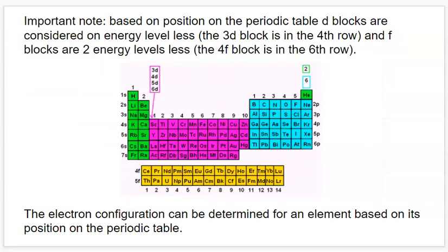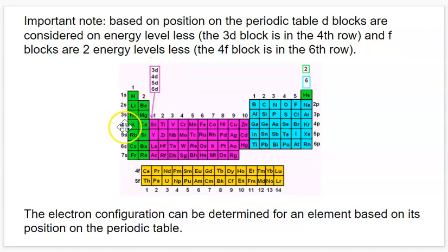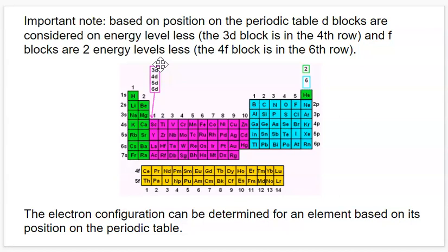There's another important thing to note about the organization of the periodic table. The rows correspond to the energy levels, but for the D block elements, the D subshells being filled across the transition metals are all one energy level less. So for scandium, for example, it's going to end in 4S2 and then 3D1, because the D subshell is in the third energy level — the electrons get kind of tucked back in to an inner shell. The D block rows are considered to be one energy level less, and the F blocks are considered to be two energy levels less.